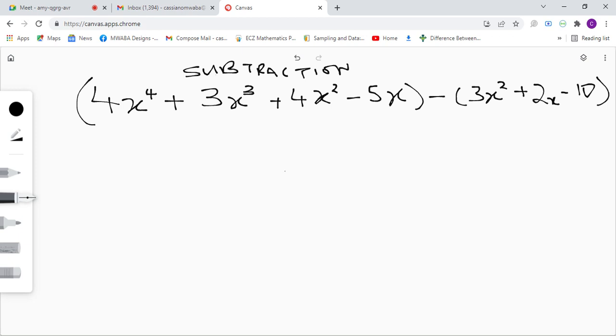Alright, so we're still looking at algebra. We're doing subtraction of polynomials. We have our equation here: 4x to the power of 4 plus 3x cubed plus 4x squared minus 5x minus 3x squared plus 2x minus 10.